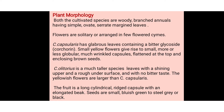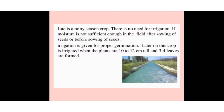Corchorus olitorius is a much taller species with shining upper leaves, a rough undersurface, and no bitter taste. The flowers of olitorius are comparatively larger than those of capsularis. The fruit is a long cylindrical capsule with a beak-like elongated structure, and the seeds are small, gray to black in color.